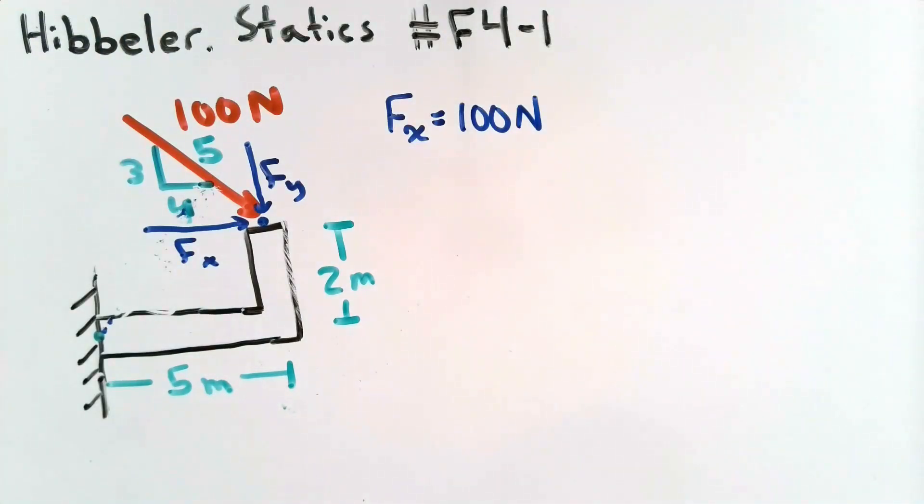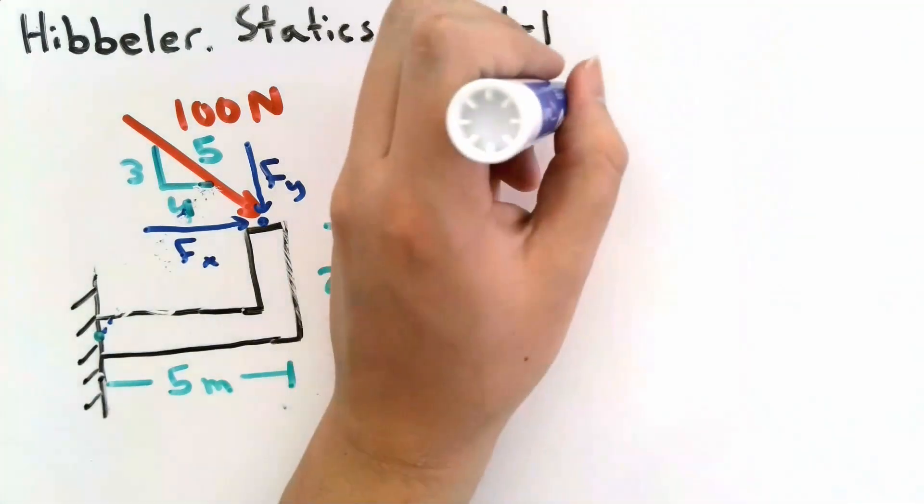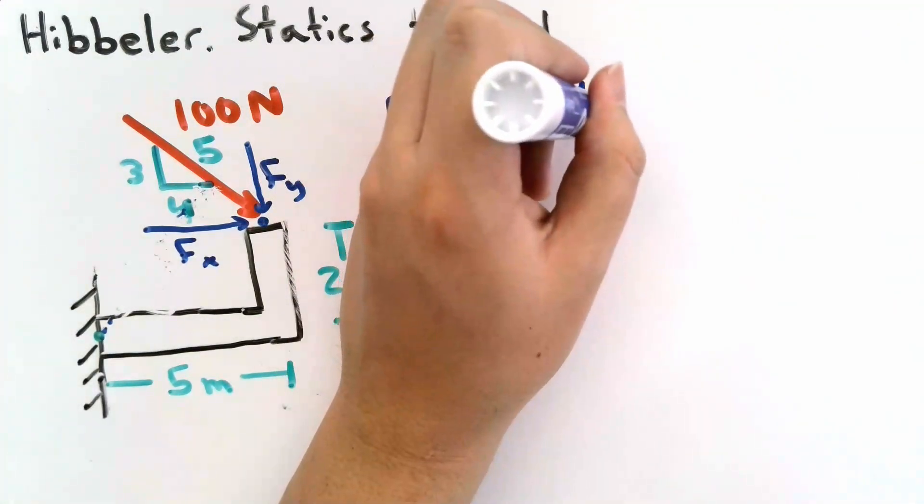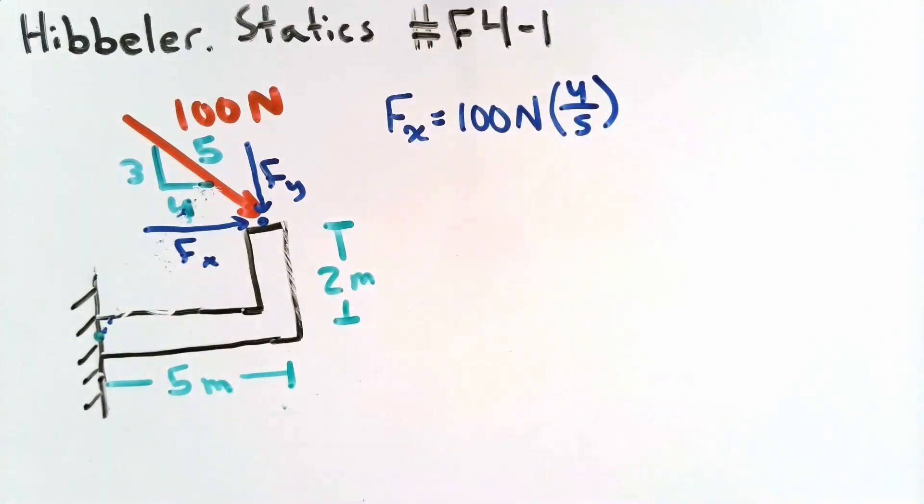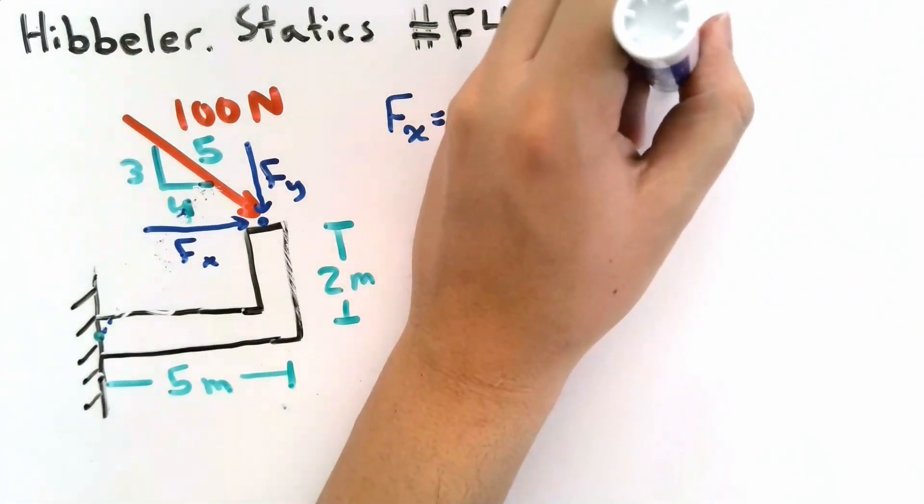The X component of the force should be equal to the magnitude of the force, that is 100 N, times the cosine of the angle of the force. The cosine of an angle is the adjacent side over the hypotenuse. In this case, the adjacent side would be 4 and the hypotenuse would be 5. This gives me an X component of 80 N.